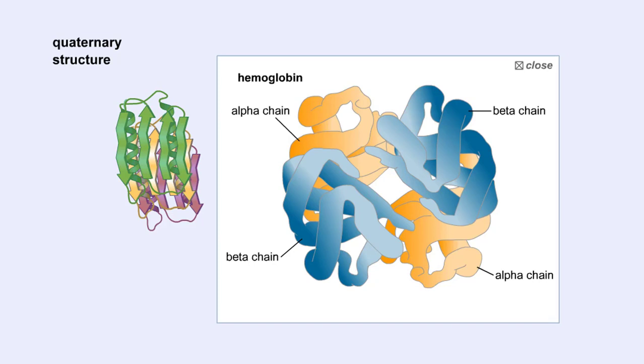Each of the four polypeptide chains possesses primary, secondary, and tertiary structure. When the shape of the protein is more or less spherical, as is the case with hemoglobin, these proteins are called globular proteins.